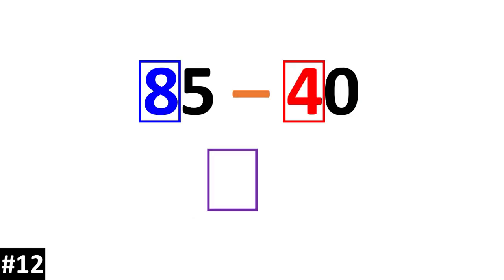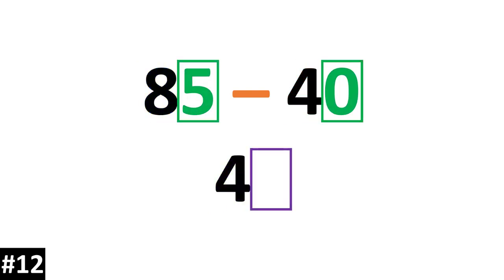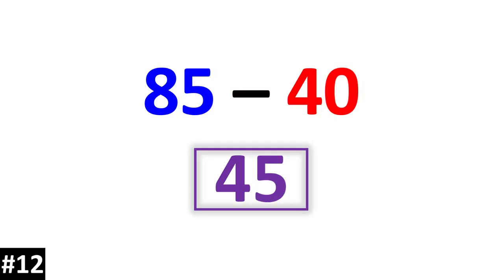85 minus 40. 85 has 8 10s and 40 has 4 10s. We subtract 8 minus 4 and we get 4. We look to the ones: 5 minus 0 is 5. So our answer is 45.